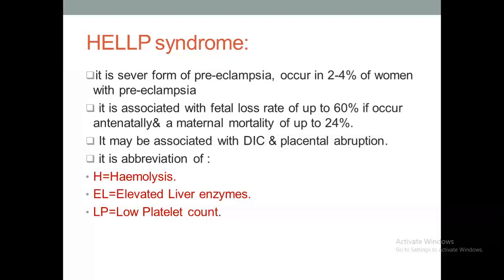HELLP syndrome is a severe form of preeclampsia occurring in 2–4% of preeclamptic women. It is associated with a fetal loss rate of up to 60% if it occurs antenatally, and up to 24% maternal mortality. It may be associated with DIC and placental abruption. The abbreviation stands for: H — haemolysis, EL — elevated liver enzymes, LP — low platelet count.